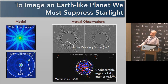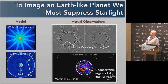We have to use some sort of instrument to suppress starlight, whether it be a coronagraph or a starshade. We're going to create a dark zone within which we can detect these faint planets. That dark zone is typically parameterized by contrast — the degree of suppression — an outer working angle beyond which we can't detect planets, and an inner working angle interior to which we can't detect planets.